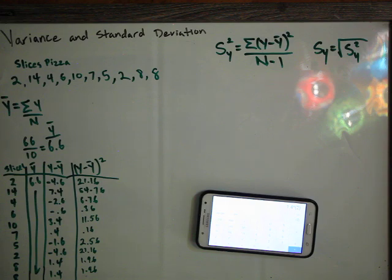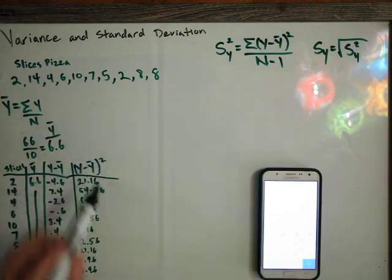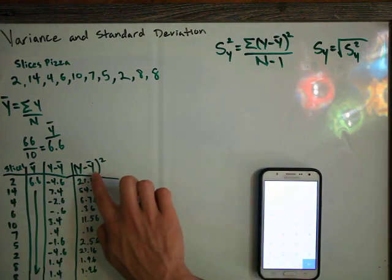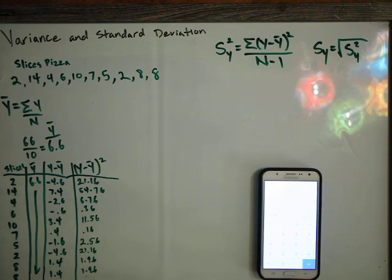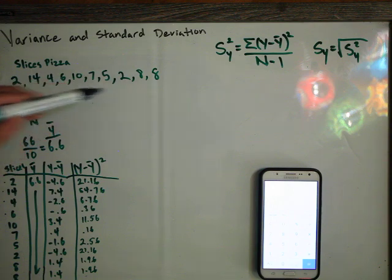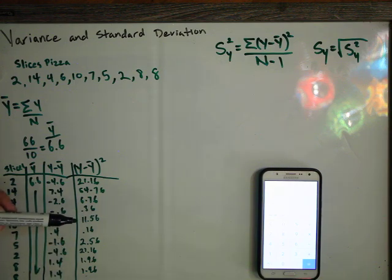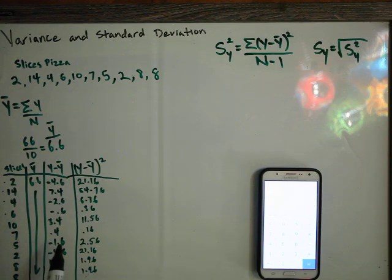In the version where we were doing this with the frequency distribution, we had to create another column that represented y minus y bar squared times the frequency. In this case, we don't have to do that because every single raw score in our data set is here. There are 10 data points and 10 scores here. So each of these y minus y bar squared counts for every raw score in our data set. We do not need to multiply by frequency. Therefore, we can just add all these numbers up.